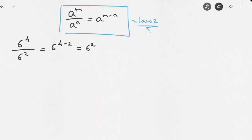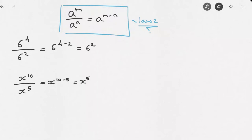Or we can have an expression involving variables — for example, x raised to the power of 10 over x raised to the power of 5. Using this law of exponents we can write that this equals x to the power of 10 minus 5, which equals x to the power of 5.